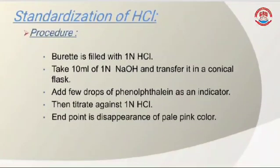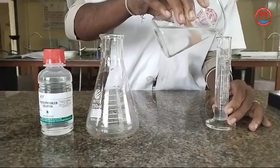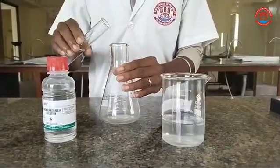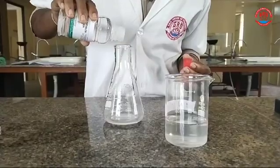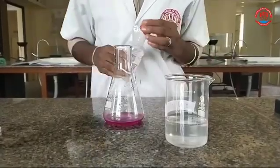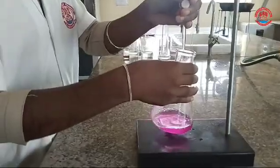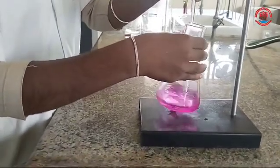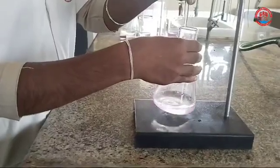Standardization of HCl — Procedure: The burette is filled with 1 normality hydrochloric acid. Take 10 ml of 1 normality sodium hydroxide and transfer it into a conical flask. Add a few drops of phenolphthalein as an indicator, then titrate against 1 normality hydrochloric acid. The end point is the disappearance of the pale pink color.